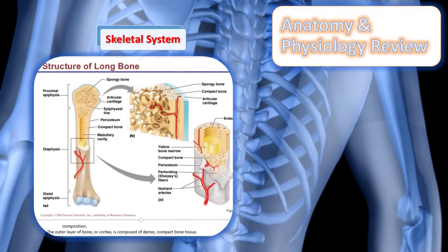Bones also contain a matrix called osteoid, consisting chiefly of collagen material, lipids, and other substances. The skeletal system provides a framework for the body, allows weight-bearing and upright support for surrounding tissues, assists in movement, protects vital organs, manufactures blood cells, and provides storage for minerals and salts.